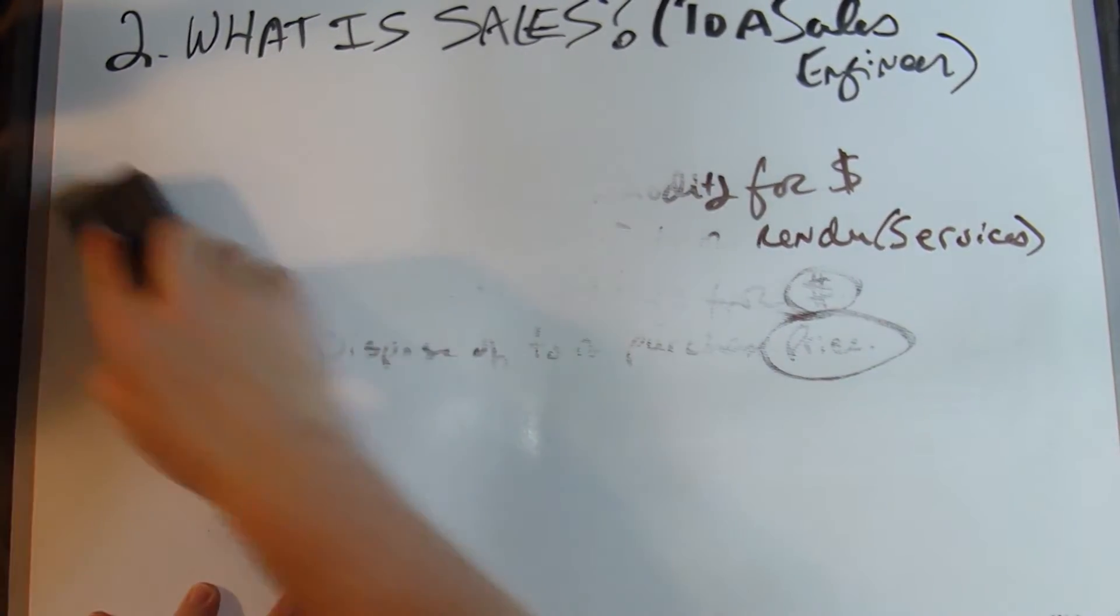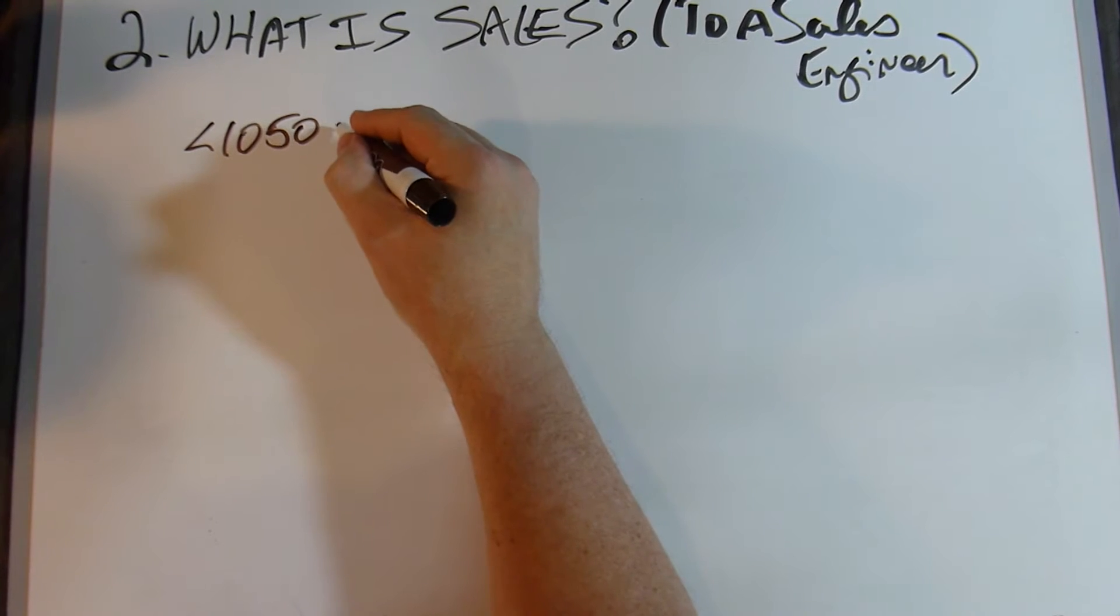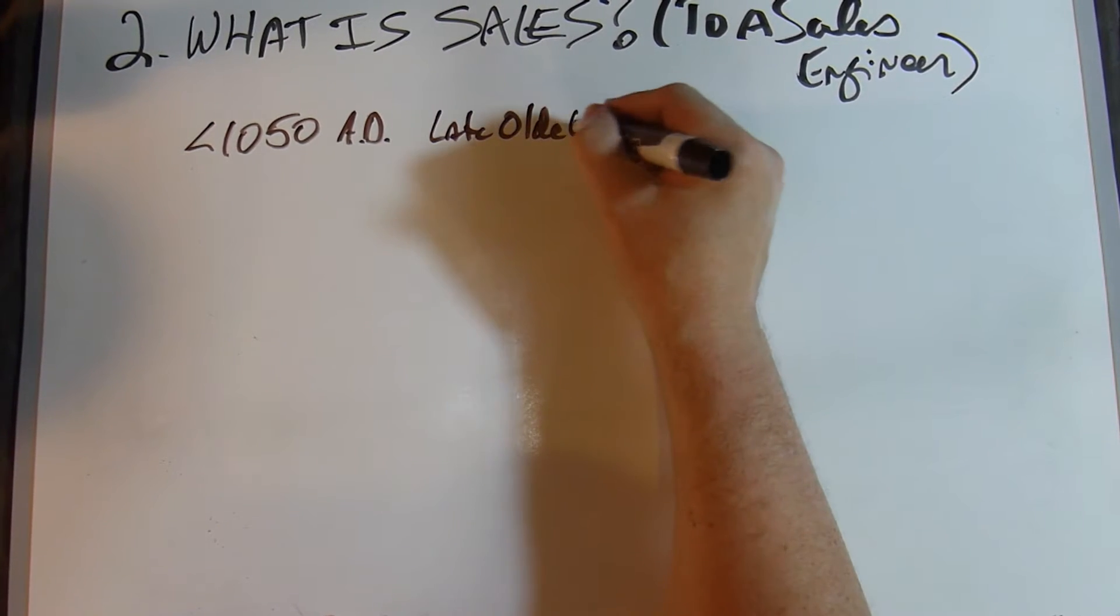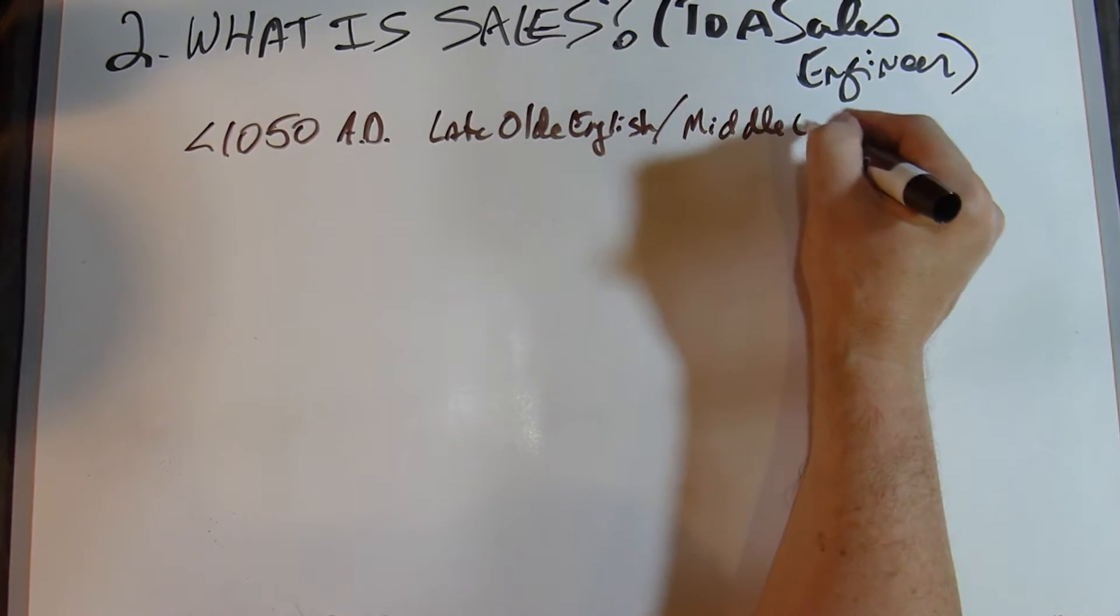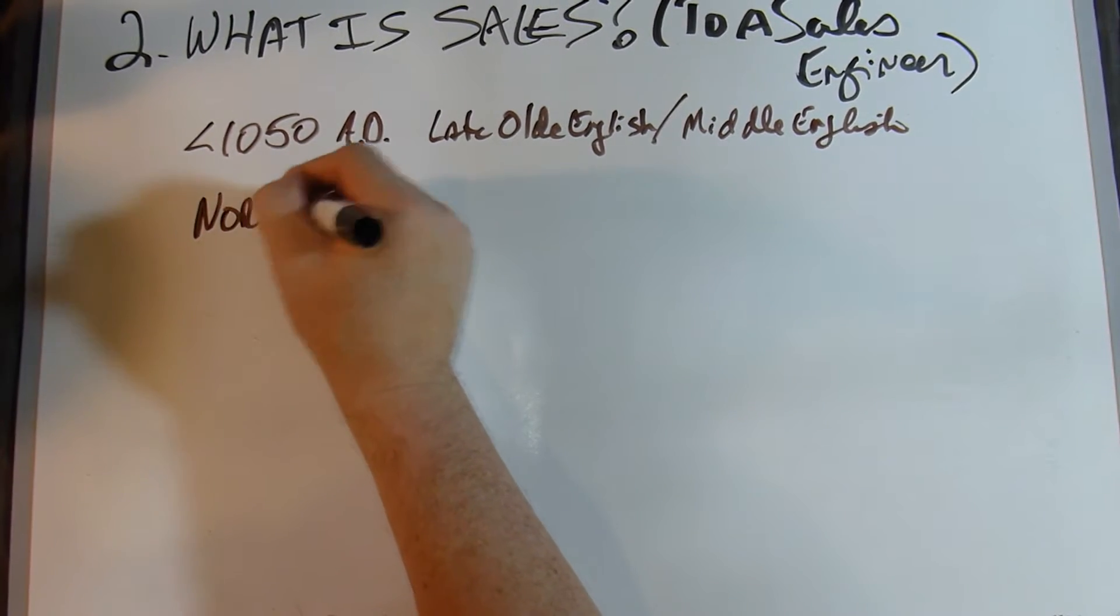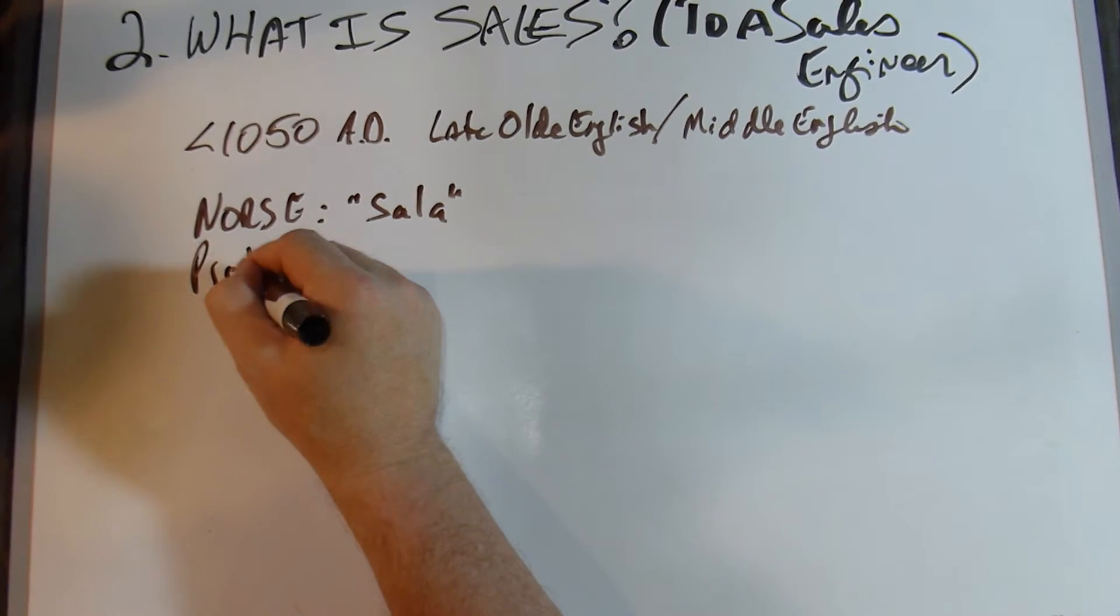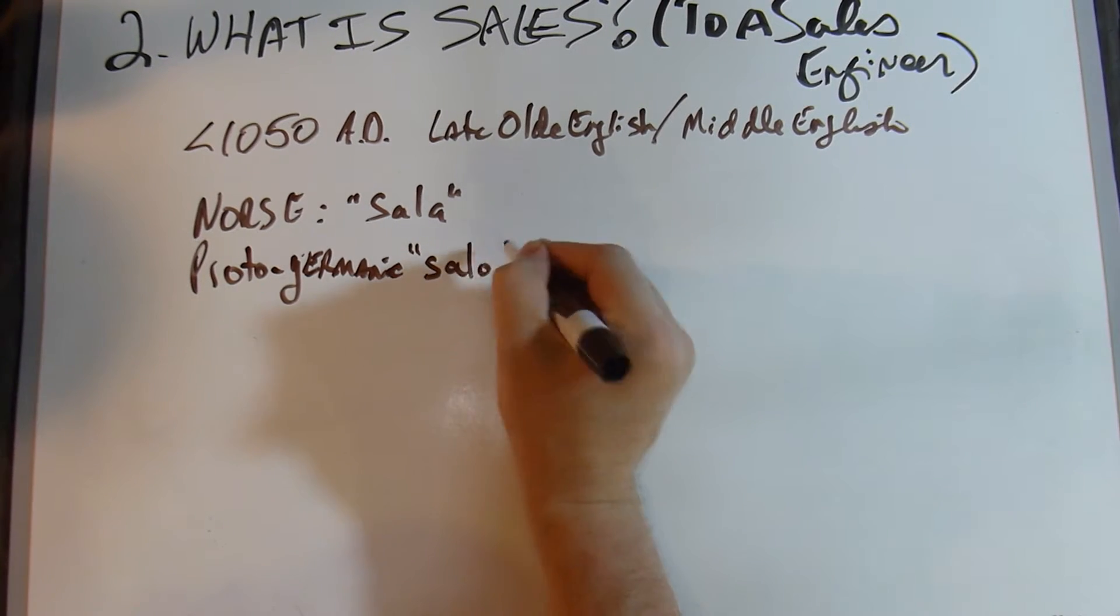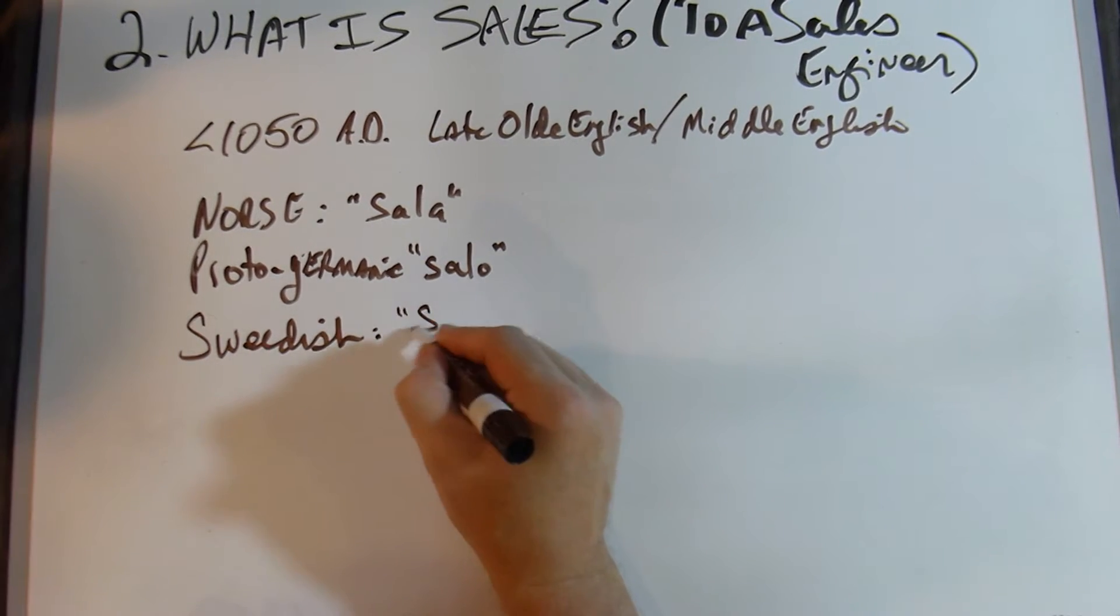Now, the source for sales, the term sales, right around 1050, from what we call late old with an E, English to Middle English. And it comes, they believe, from the Norse word Sala, or in Proto-Germanic, Salo. In Swedish, S-A-L-U.